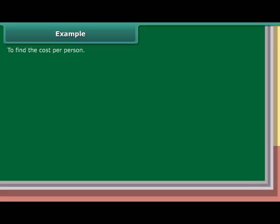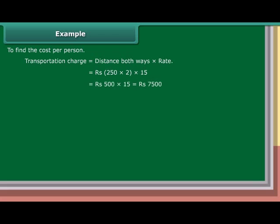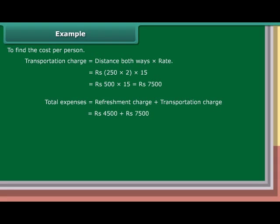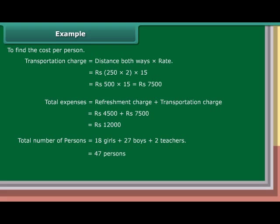Cost per person: Transportation charge = distance both ways × rate = 500 × Rs. 15 = Rs. 7,500. Total expenses = refreshment charge + transportation charge = Rs. 4,500 + Rs. 7,500 = Rs. 12,000. Total number of persons = 18 girls + 27 boys + 2 teachers = 47 persons. Amount spent per person = Rs. 12,000 / 47 = Rs. 255 approximately.